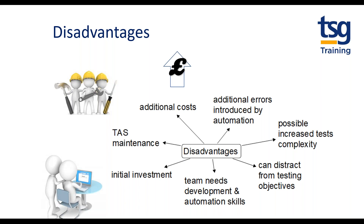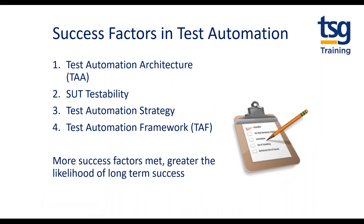Any change needs to be carefully managed, and the team typically needs support and training. The test automation solution — the TAS — is, to quote the glossary, a realisation or implementation of the test automation architecture: a combination of components implementing a specific test automation assignment. Those components might include commercial off-the-shelf test tools, test automation frameworks, as well as test hardware. The TAA's maintainability, performance, and learnability will all affect its success.